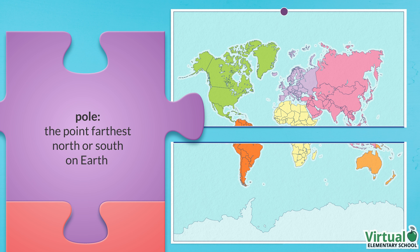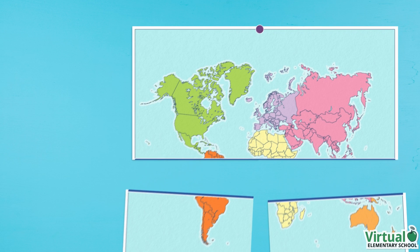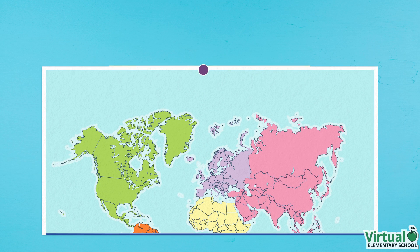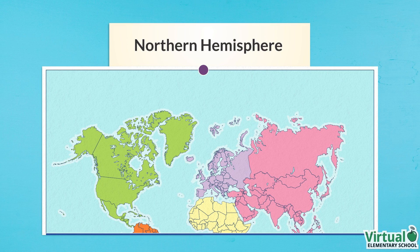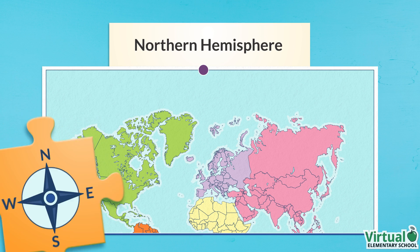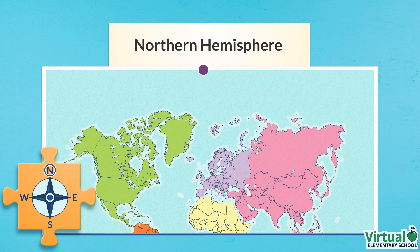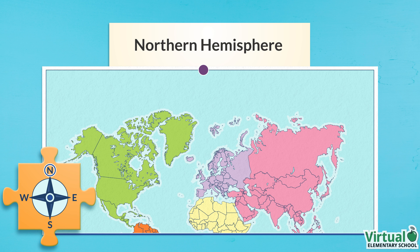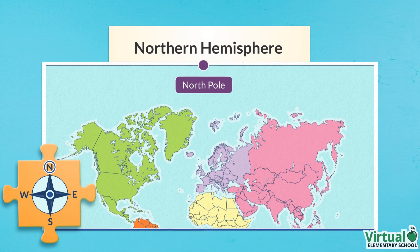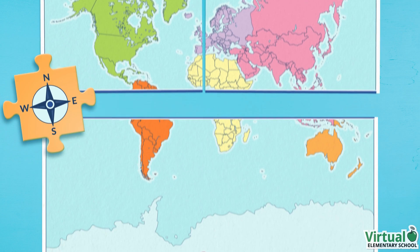The northern and southern hemispheres each have a pole — there is a pole at the northernmost point of the earth and at the southernmost point. The area above the equator is called the northern hemisphere. On the compass rose, we see that N is circled to identify the area north of the equator. The most northern point in the world is the North Pole.